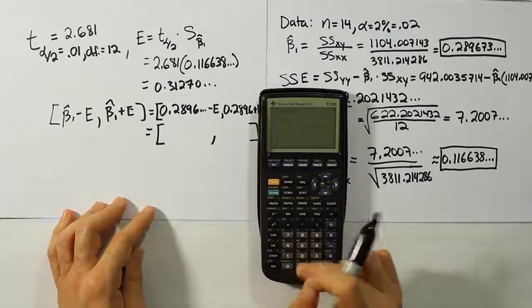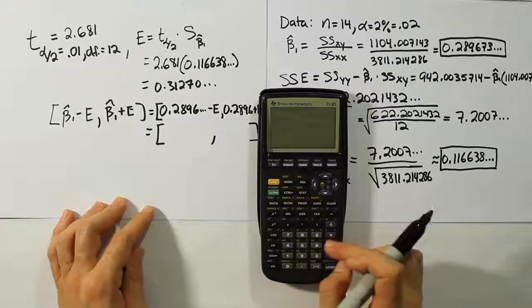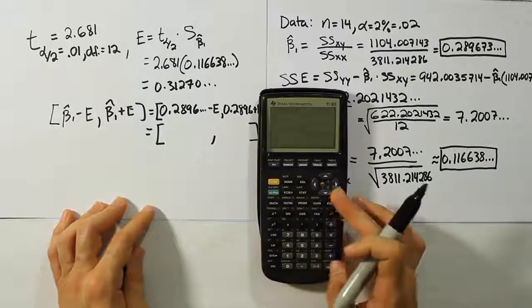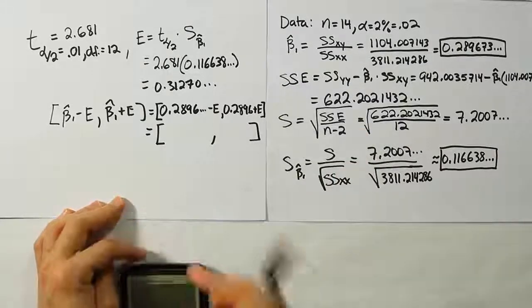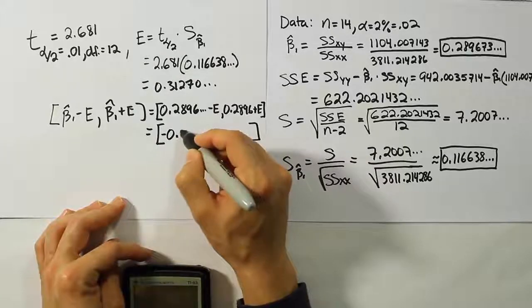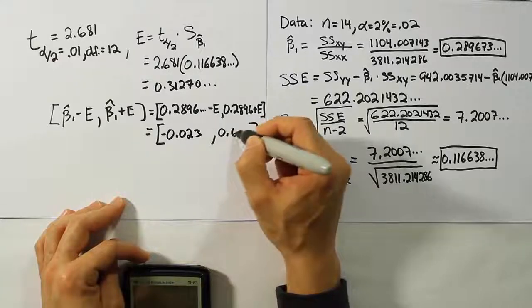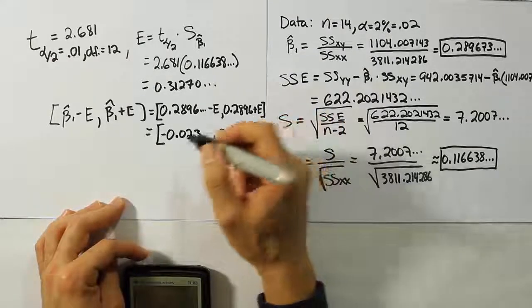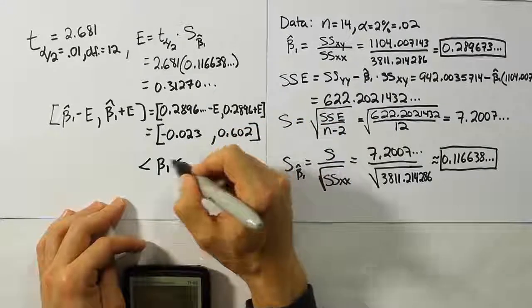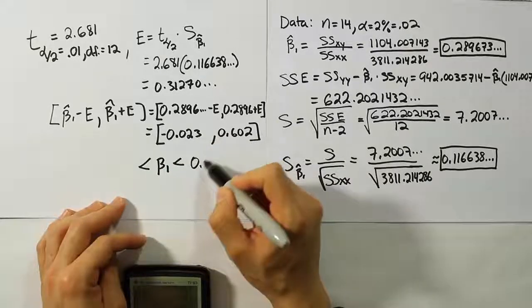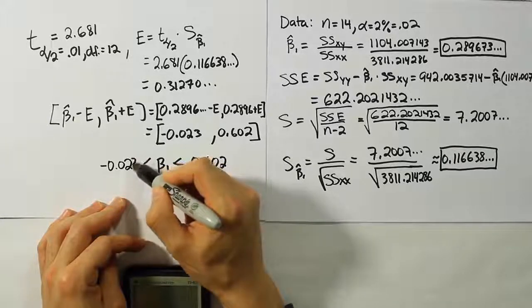When we work that out, we'll have the following result. It's going to be 0.289673 minus the error and then that same value plus the error. We get this interval which includes negative values, negative 0.023 up until 0.602. So there's our interval. If you want to write it in a different format, we can put beta1 in the center. That's the population parameter for the slope. And we get 0.602 and negative 0.023.